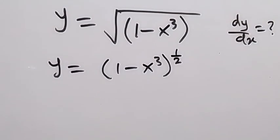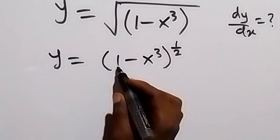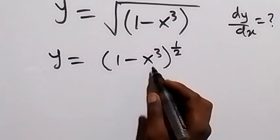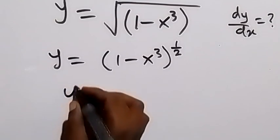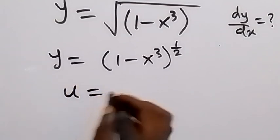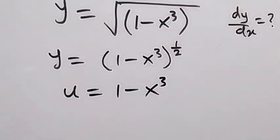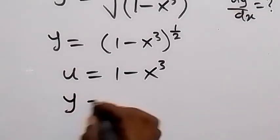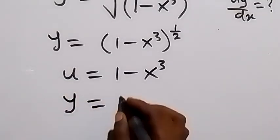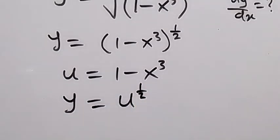We let a letter represent 1 minus x cubed, so if u equals 1 minus x cubed, then we can rewrite y as a function of u. So y will now be u raised to power half. We call this a function of a function.